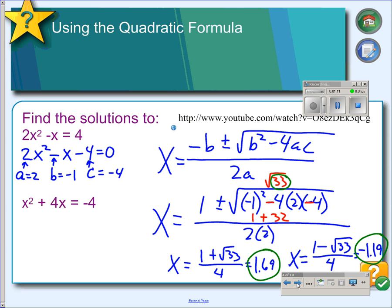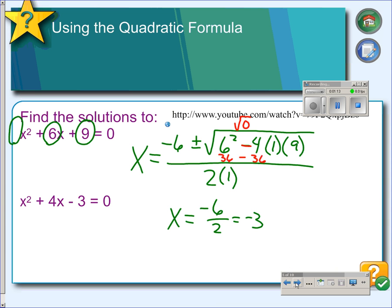In our second problem, we got a discriminant of zero. Since the discriminant was zero, we should only get one solution, and we did. We just got negative 3.